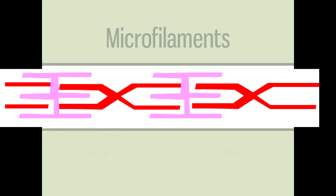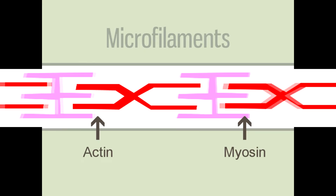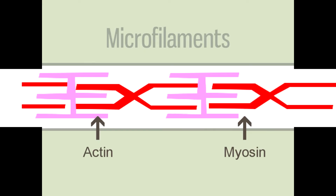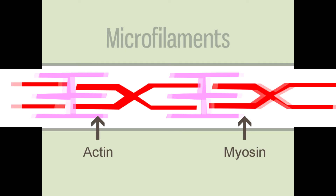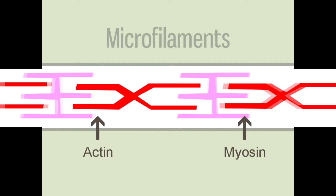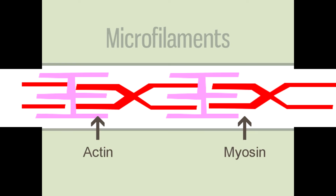Actin filaments interact with other filaments composed of myosin — two key components of muscle cells. Myosin filaments have structures that can extend and bind to actin filaments, allowing the two filaments to slide past each other. This mechanism allows muscle cells to stretch and shrink during contraction and relaxation of muscles.